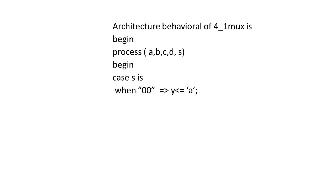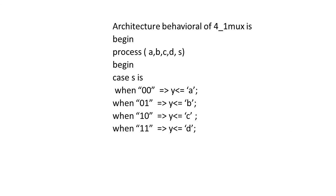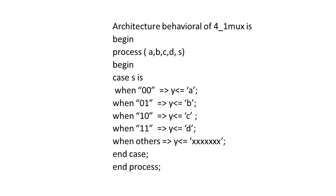With case s is: when 00 => y is connected to a; when 01 => y is connected to b; when 10 => y is connected to c; when 11 => y is connected to d. In most cases, if by mistake more input combinations are given beyond the two-bit combinations, we add: when others => y is undefined (xxx). Finally, end case, end process, end architecture. This is how case statement and if-else statement are used in VHDL.